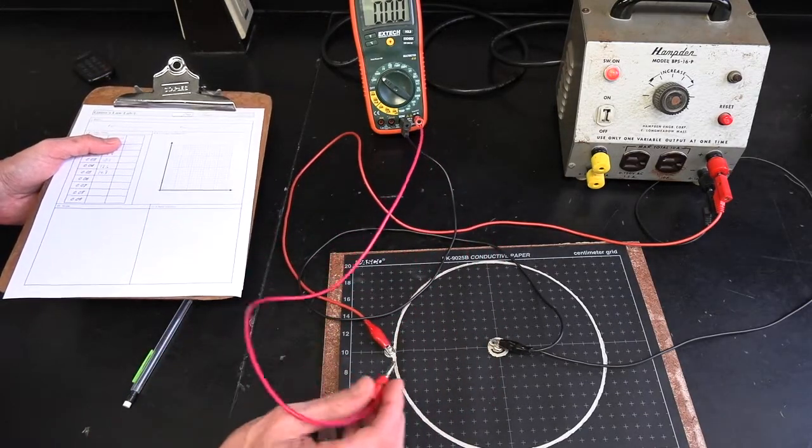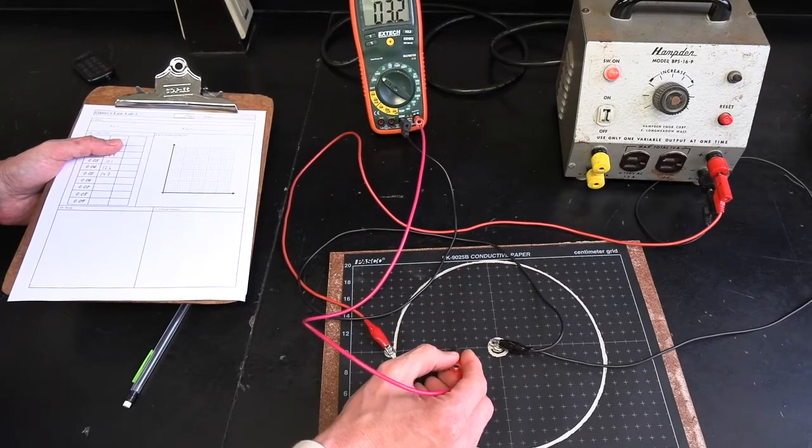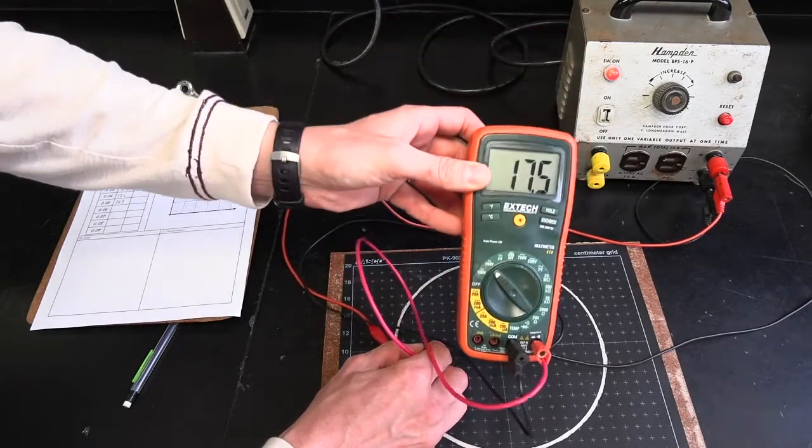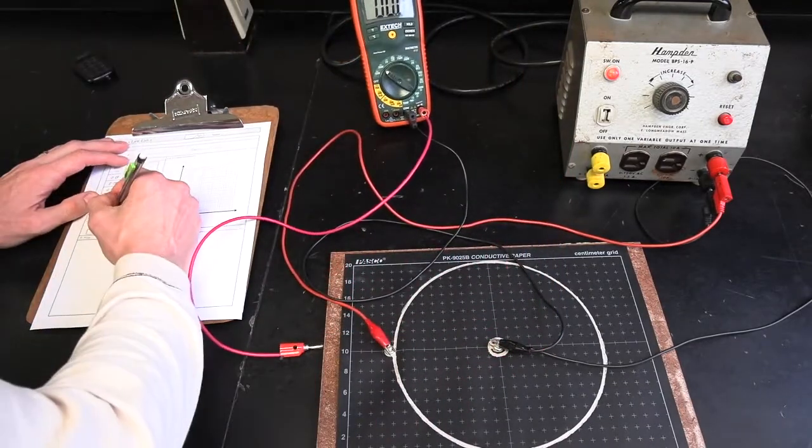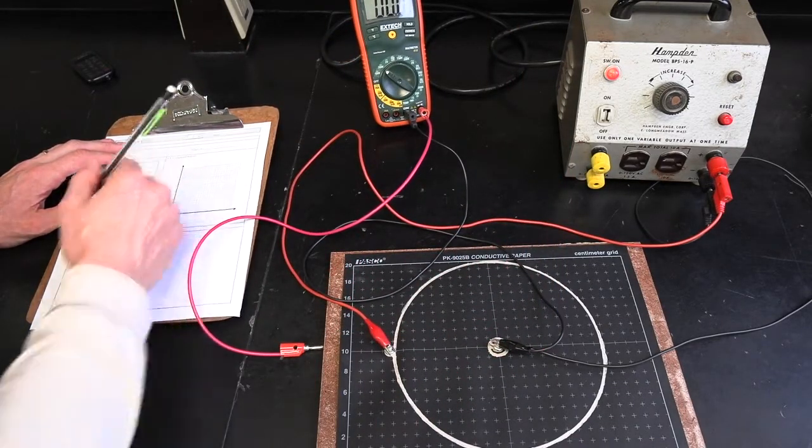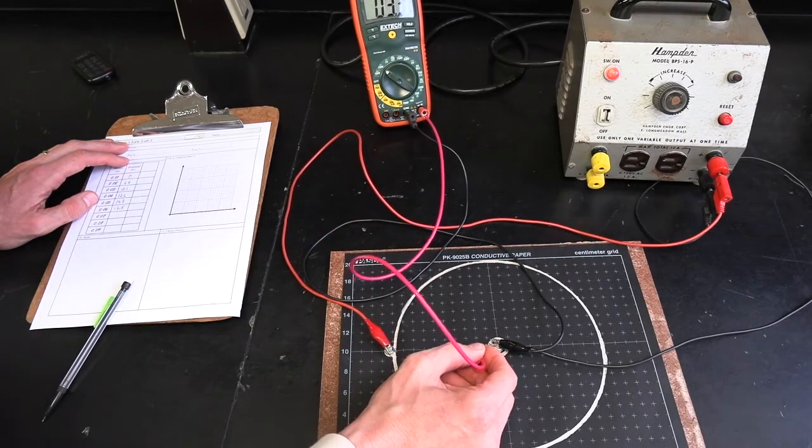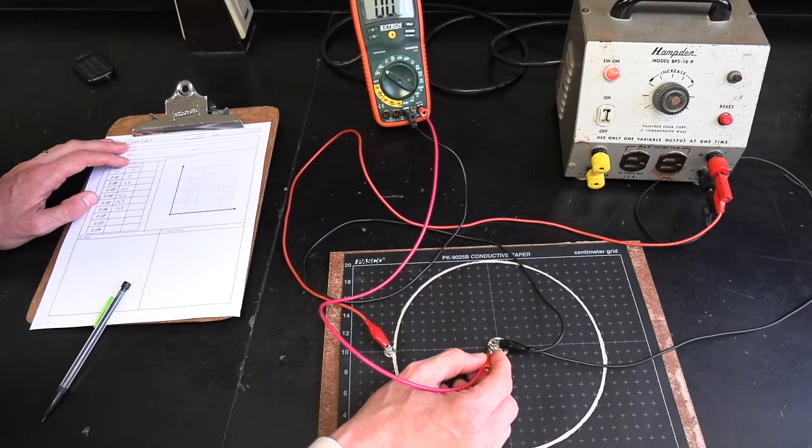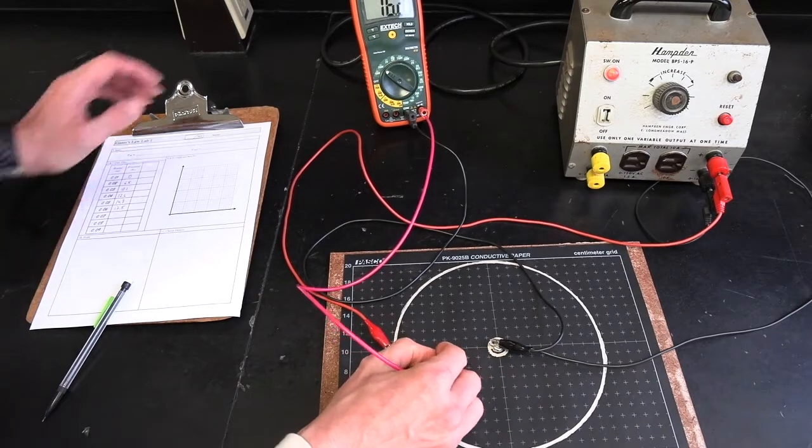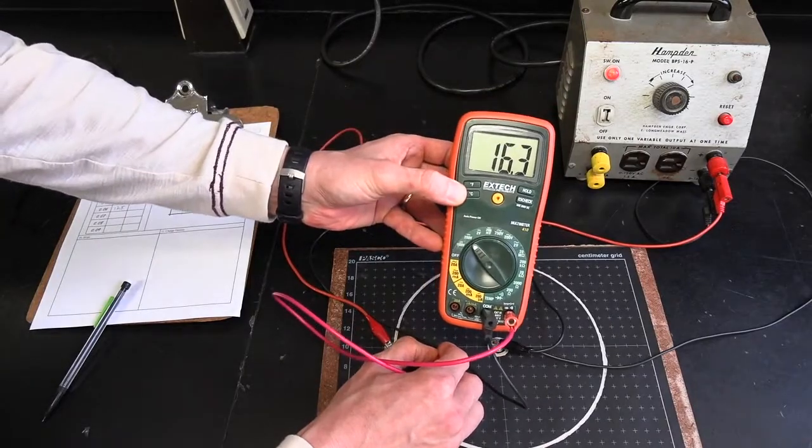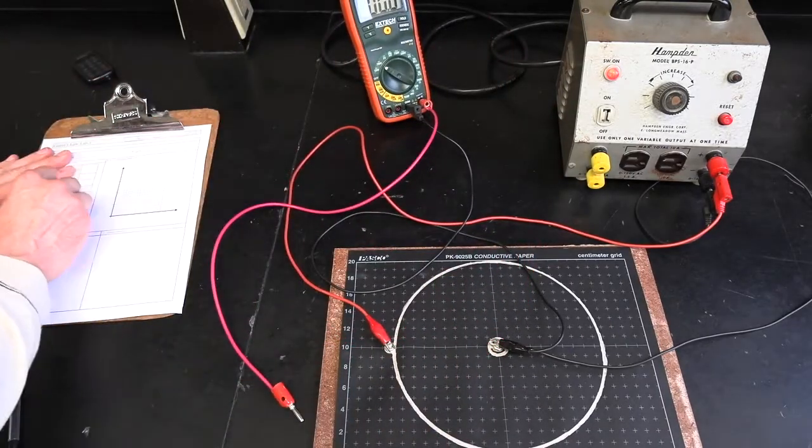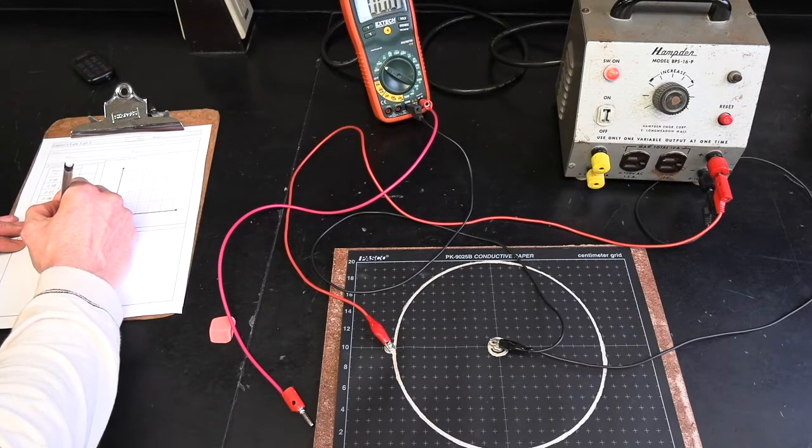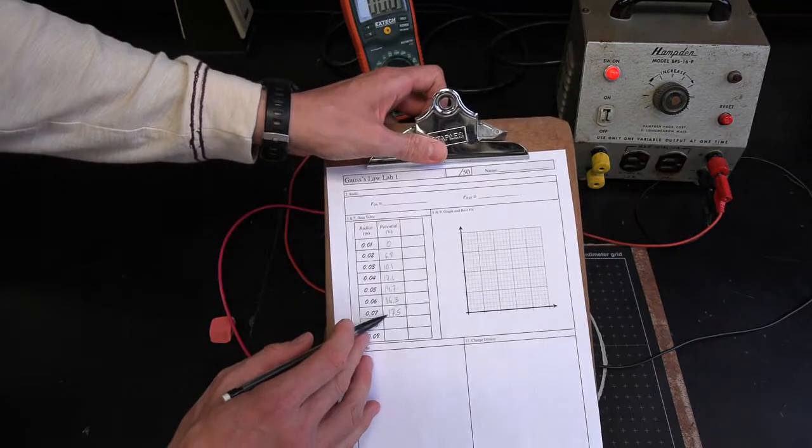So let's measure what the integral would be at the 6 centimeter mark. 1, 2, 3, 4, 5, 6 right here. And I get about 17.5, okay, volts. And then I'm going to go to 7 centimeters. 1, 2, 3, 4, 5, 6, 7. Uh-oh, you know what I did? I think I skipped 6, actually. 1, 2, 3, 4, 5, 6. Yeah, there we go. 6 is actually 16.3. So let me fix that. And the 17.5 that I measured before was actually at the 7 centimeter mark. So there am I. And I have two more to go.